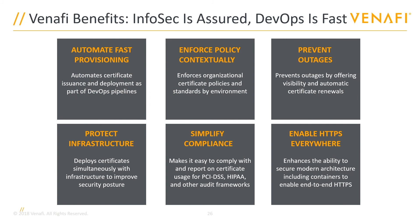Thanks for taking some time to explore how Venify and Terraform can help enable the InfoSec and DevOps teams to work faster and more securely together while continuing to use the same tools they use every day. As key takeaways: together, Venify and HashiCorp help automate the fast provisioning of machine identities in DevOps pipelines; we help enforce consistent policy across the entire organization; and we help prevent certificate-based outages by enabling visibility and automation for the security team while still providing DevOps teams the speed of issuance they need. Ultimately, InfoSecurity is assured, DevOps is fast, and most importantly, they are working together to enhance the security of the organization.